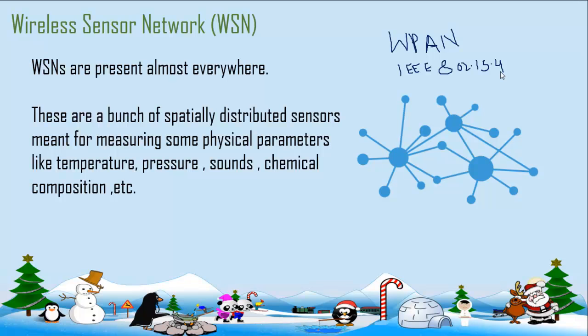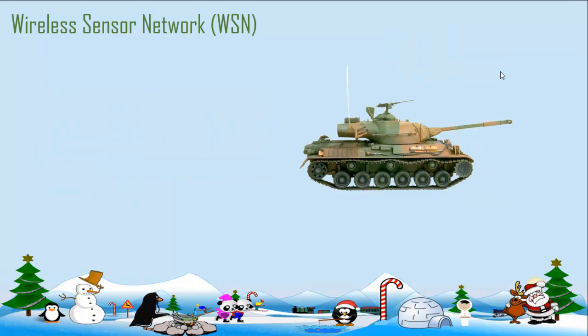When we deploy sensors in our area of interest — whether it is agricultural land, a forest, or even enemy territory — they are meant for measuring physical parameters like temperature, pressure, sounds, and chemical composition, or even to detect the presence of enemy vehicles like tanks.